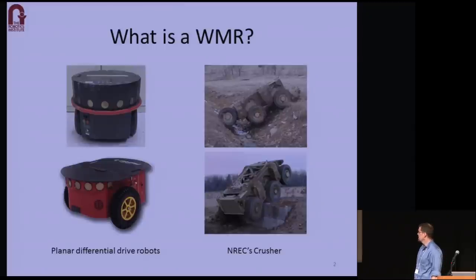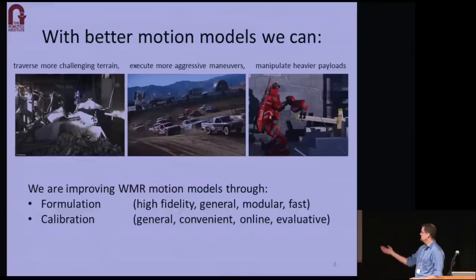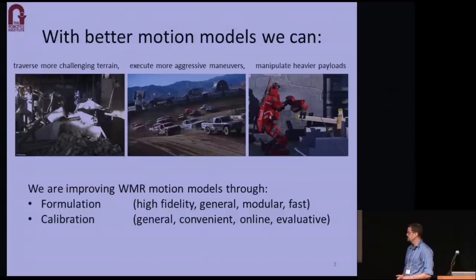And so what we've done is we've done our best to develop high fidelity 3D dynamic models so vehicles like Crusher can plan their way over ditches and walls. And with higher fidelity models, mobile robots can potentially traverse rougher terrain, drive more aggressively, and manipulate heavier payloads. So we're focusing on two research areas. The first is the formulation of high fidelity motion models that are general, modular, and fast enough for predictive motion planning. And our particular formulation is unique in its use of constraints to enforce realistic, nonlinear models of wheeled terrain interaction.